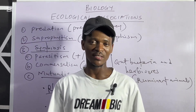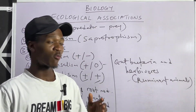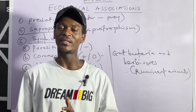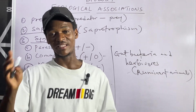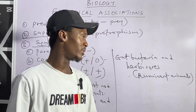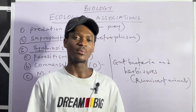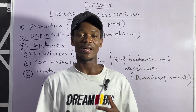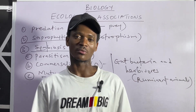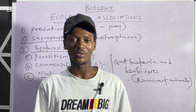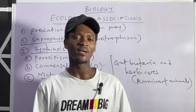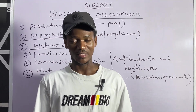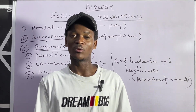So in summary: if two organisms are both benefiting, that's mutualism; if one is benefiting and the other is not suffering harm, that's commensalism; and if one is benefiting at the detriment of the other, that's parasitism. It's my hope that this short video class will be of help to you. Thanks for watching, do subscribe if you haven't, and invite your friends to this channel. I wish you all the best.